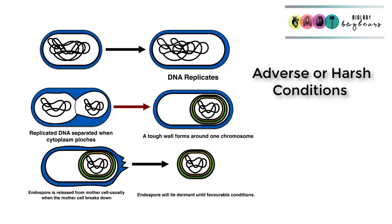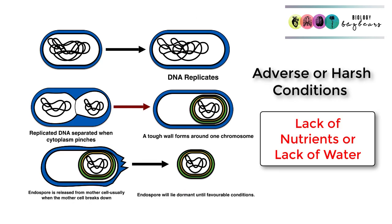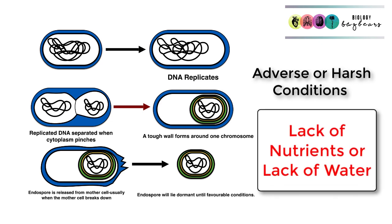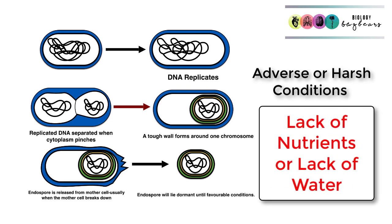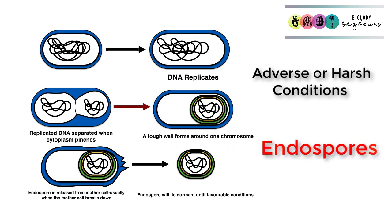Bacteria can survive adverse or harsh conditions, for example lack of nutrients or lack of water, and they do this by forming these structures called endospores. Endospores are really resistant to temperature and extremes of pressure, so they're very tough.